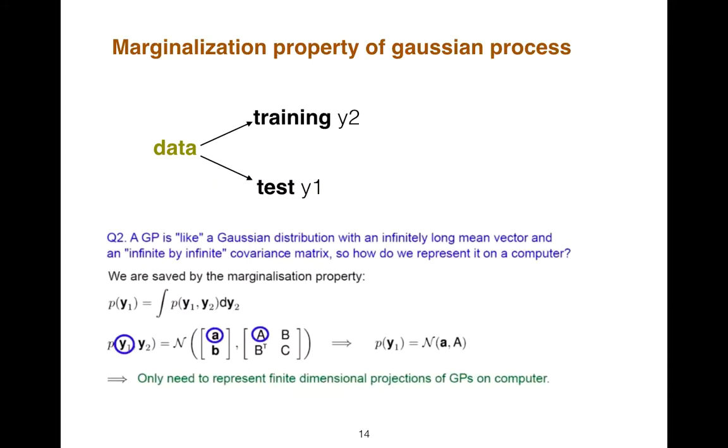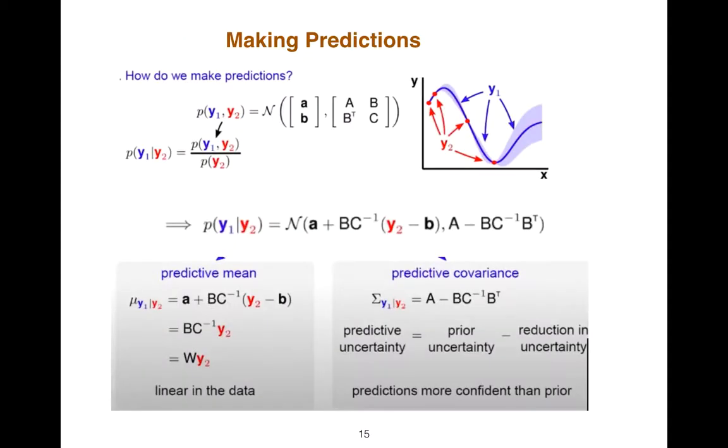So we divide our data set into training set and test set. And using simple math, you could just read. If you condition on Y2, you can just read Y1 and predict it.